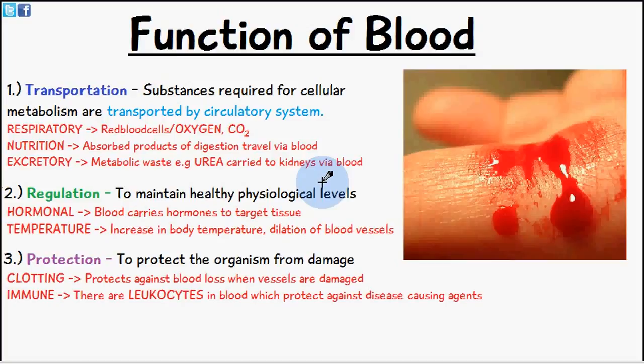So there are three main functions of blood: transportation, regulation, and protection. In terms of transportation, we mean that substances required by the body or for cellular metabolism are transported by the circulatory system.